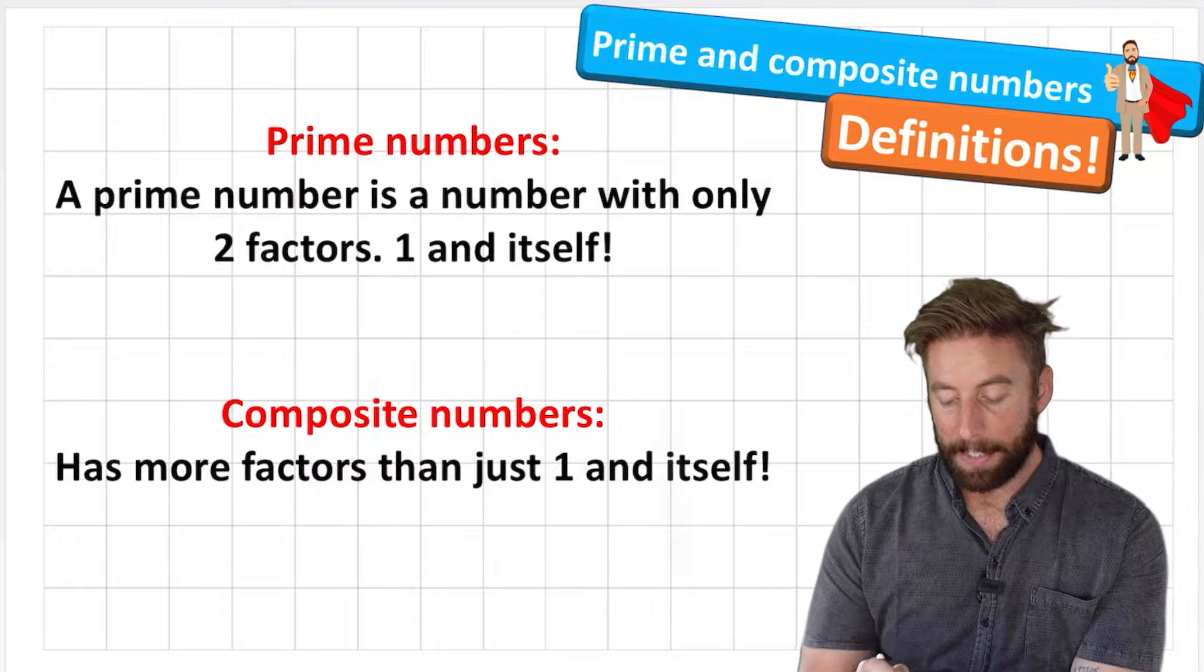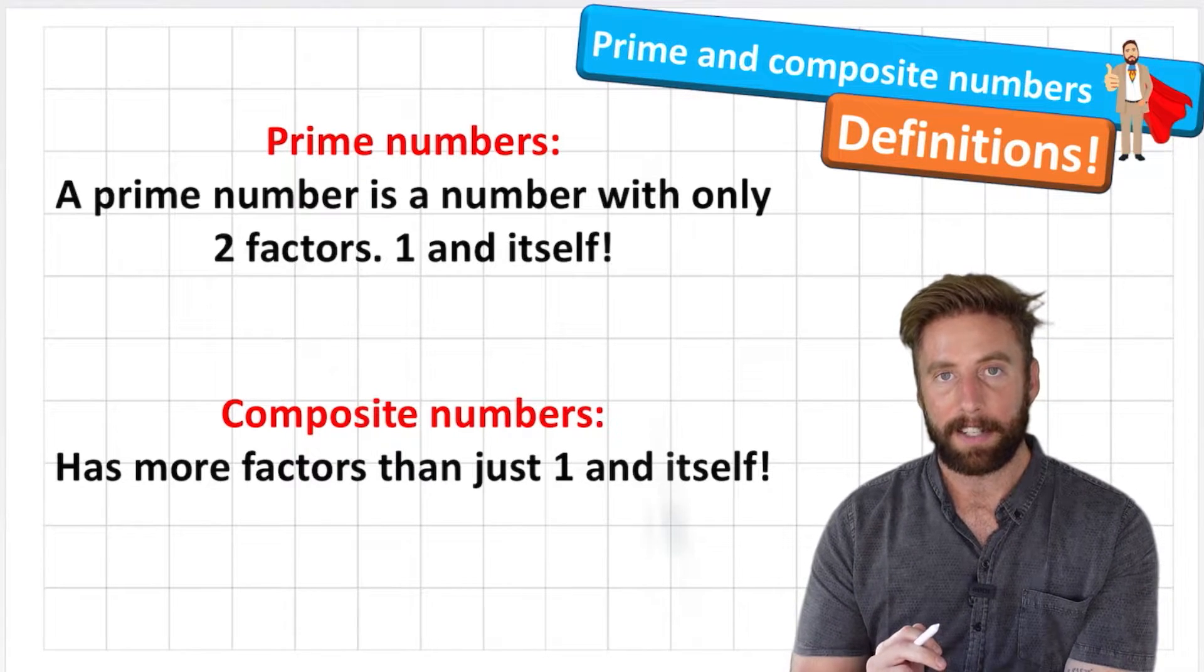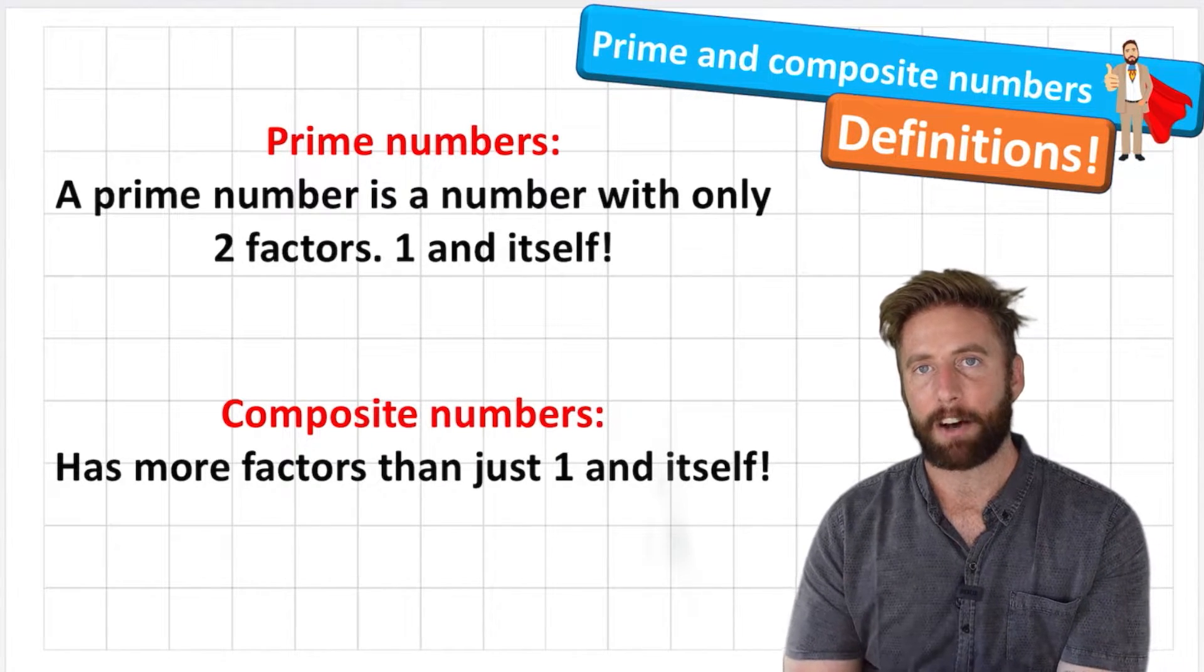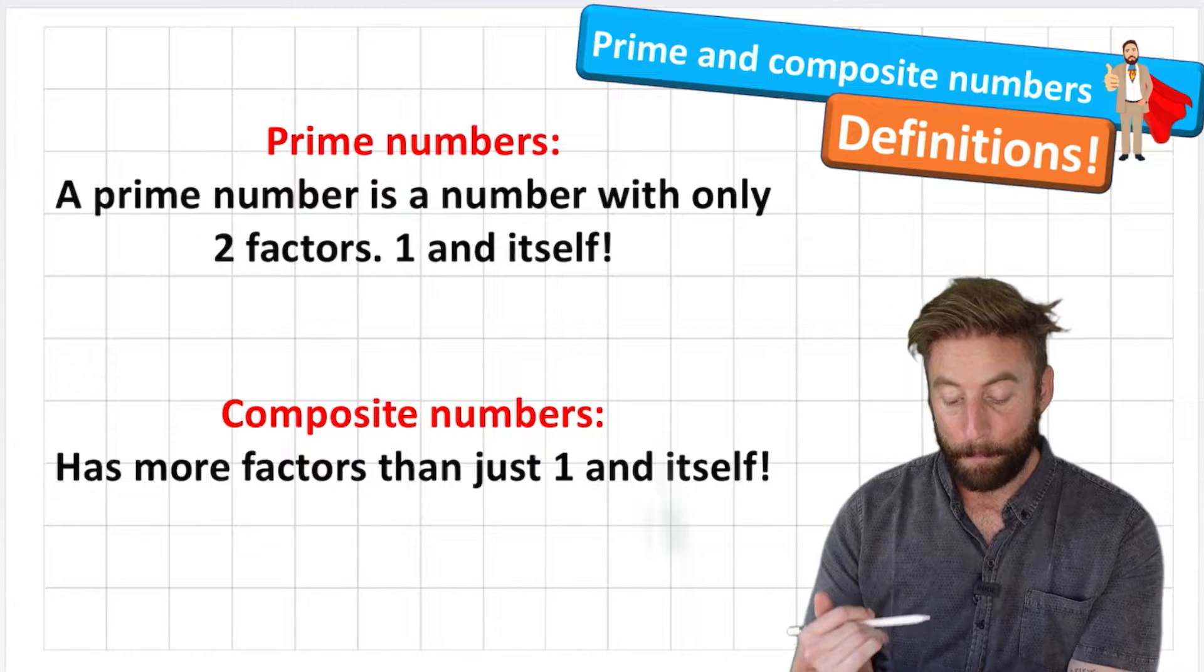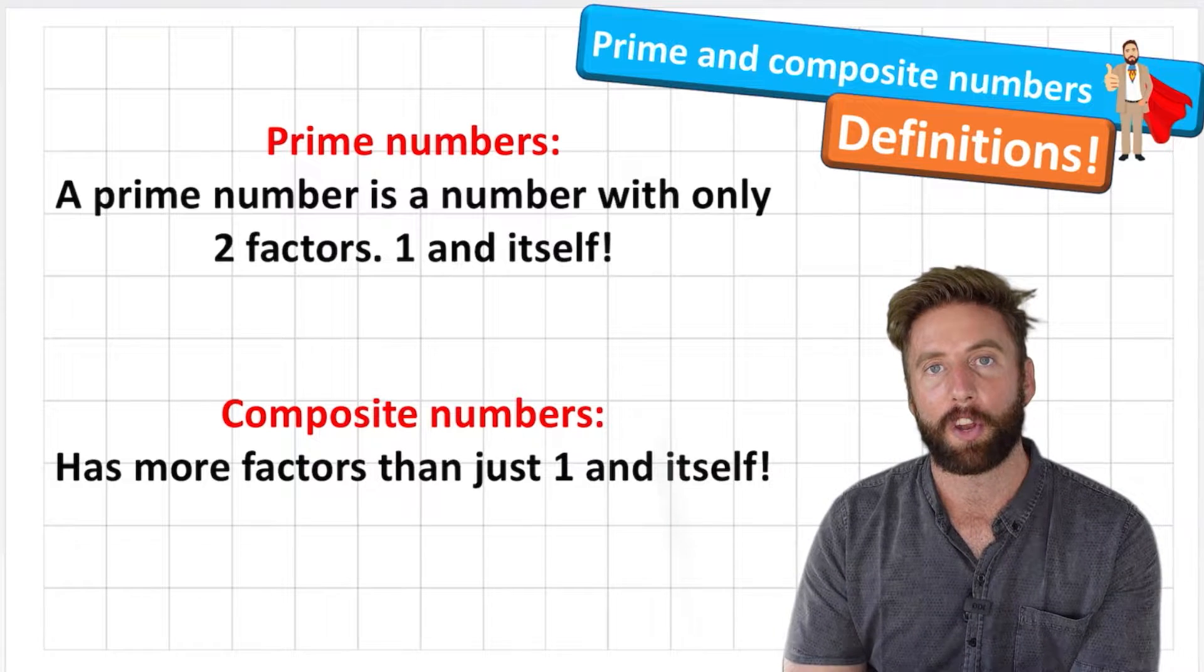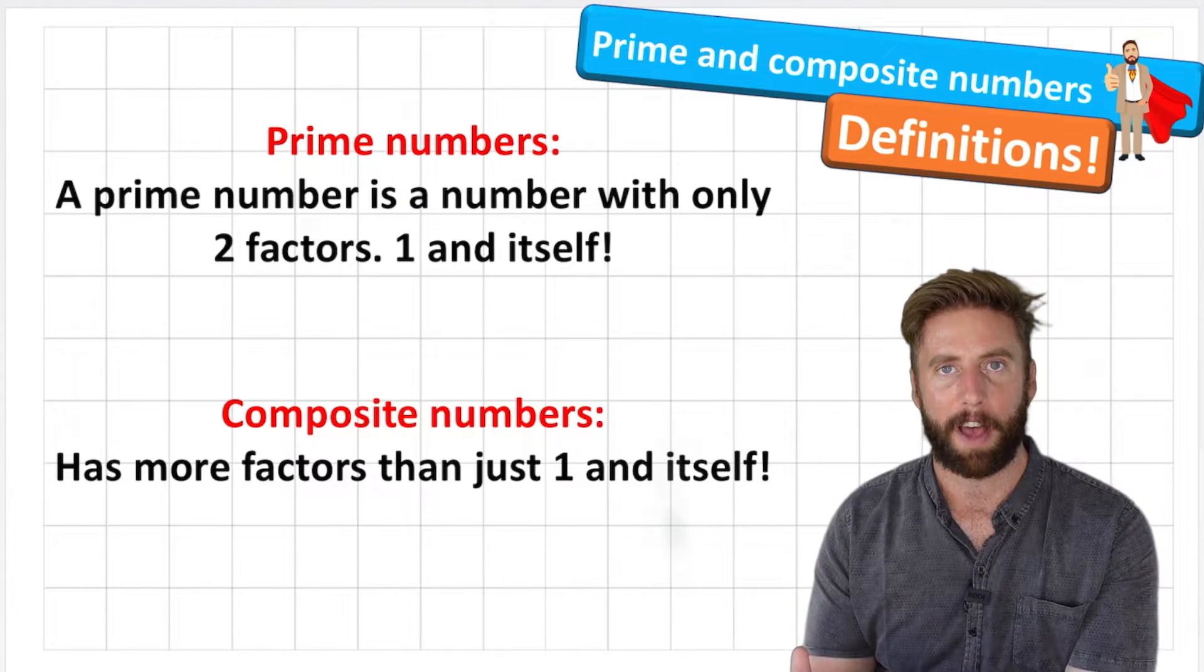So a prime number is a number with only two factors, one and itself, and we're going to discuss what that means in a minute. Composite numbers are numbers that have more factors than just one and itself, so a range of different factors.